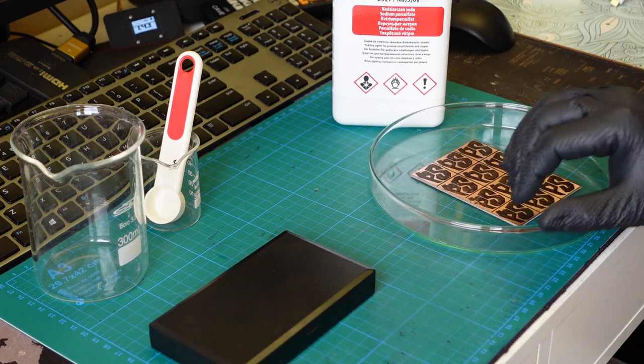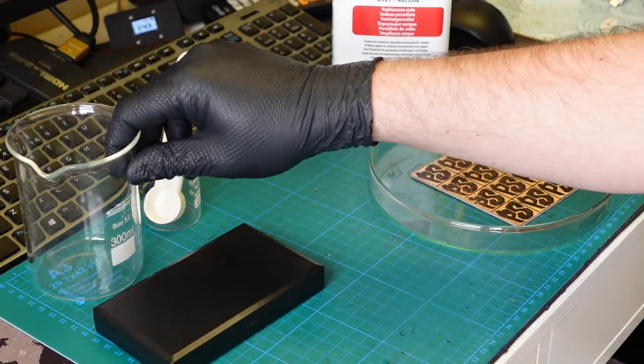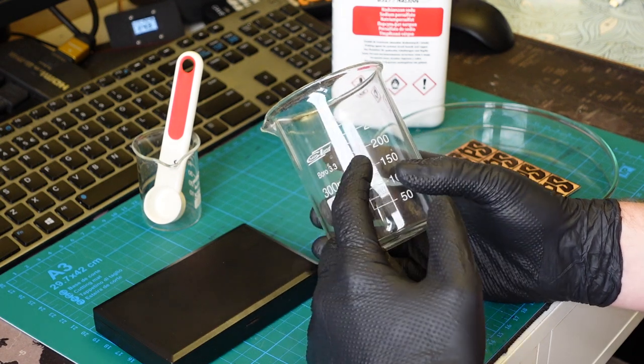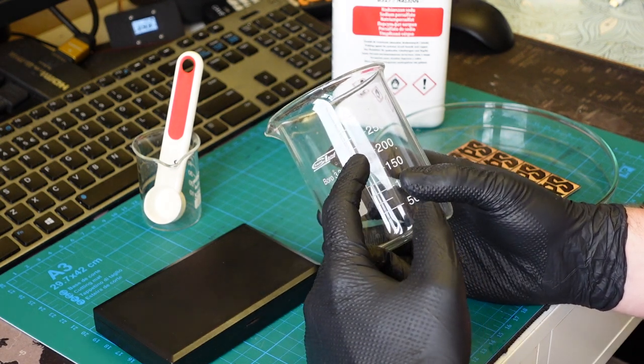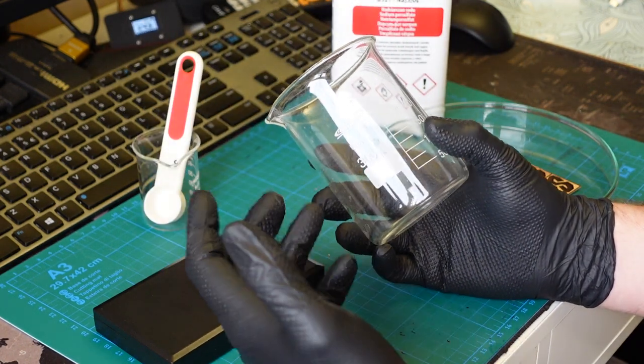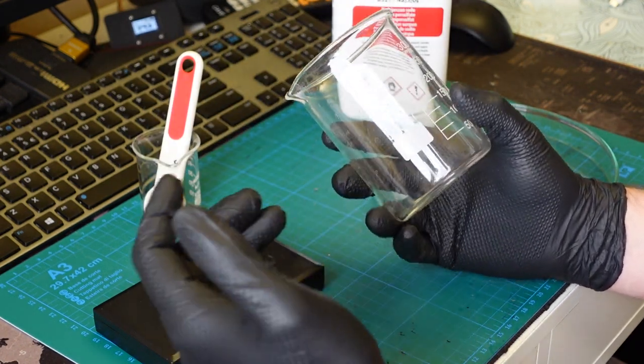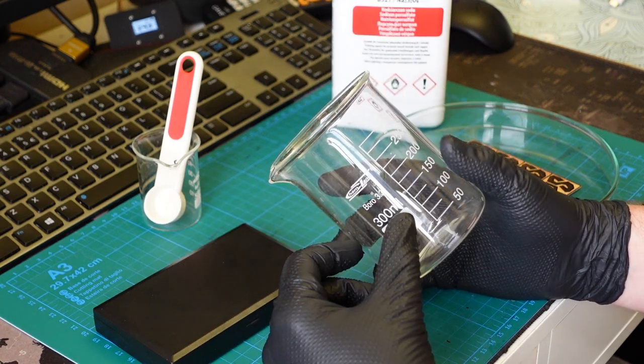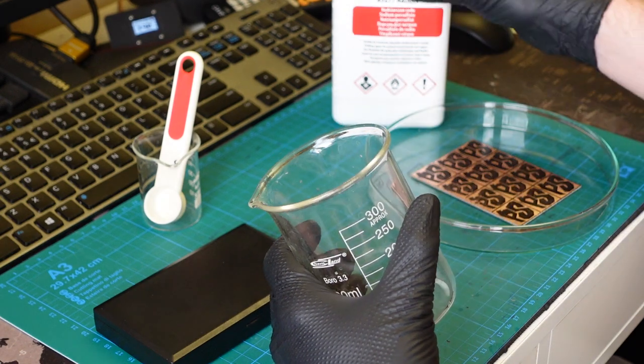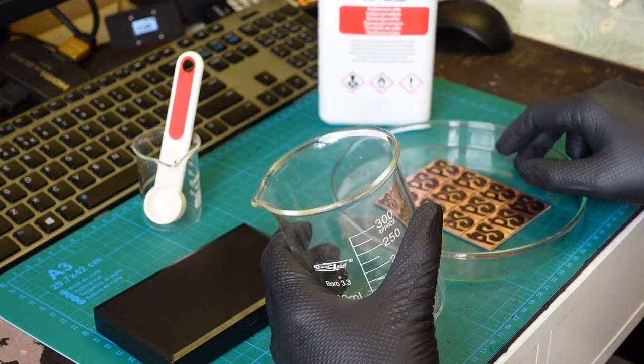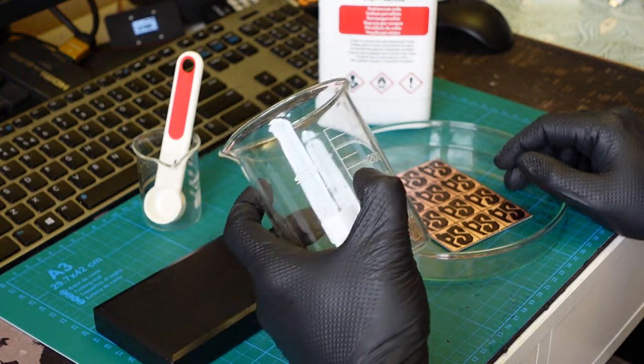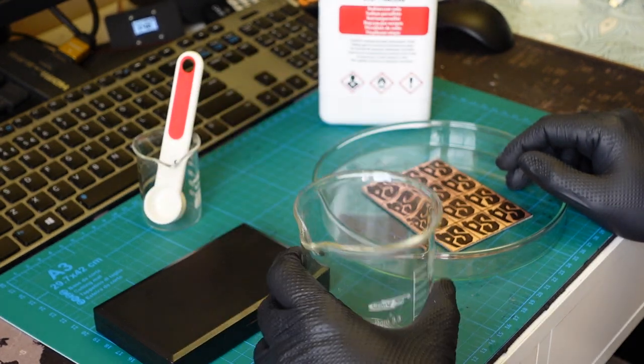You want another container where it's easy to actually measure how much water you've poured in. A beaker is obviously designed for that, but an ordinary glass will suffice. I think it should be glass because you're gonna need to mix this with water before you actually put it in.